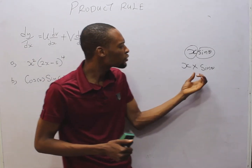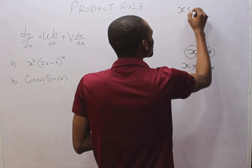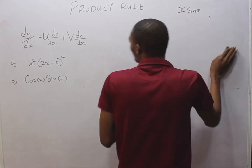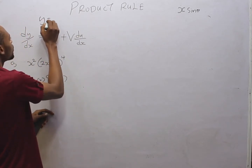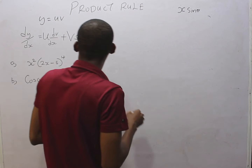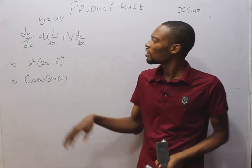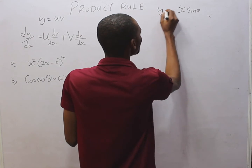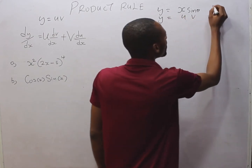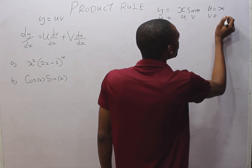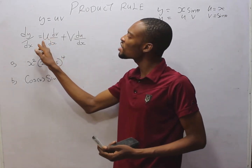What does product rule state? The product rule states that if y equals uv, then dy/ds equals u·(dv/ds) plus v·(du/ds). For example, y equals x·sin(θ). We identify this as y equals uv where u equals x and v equals sin(θ).